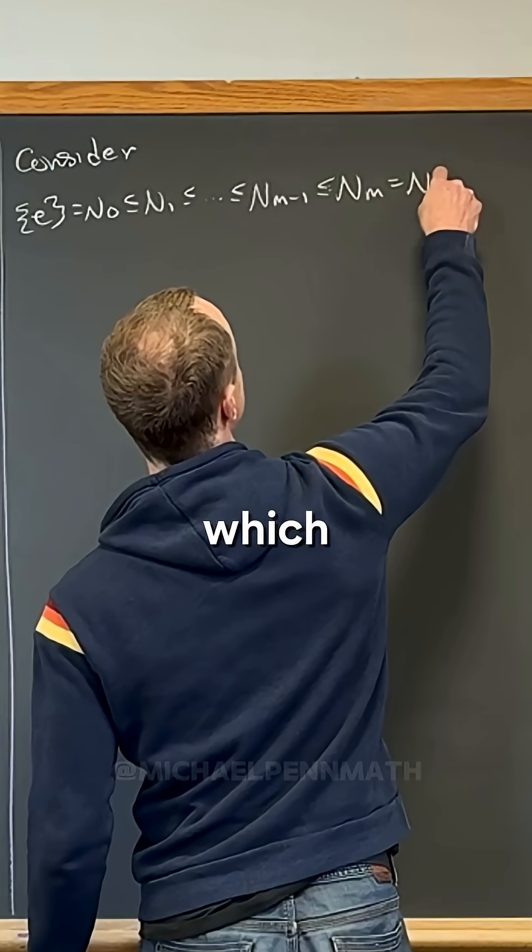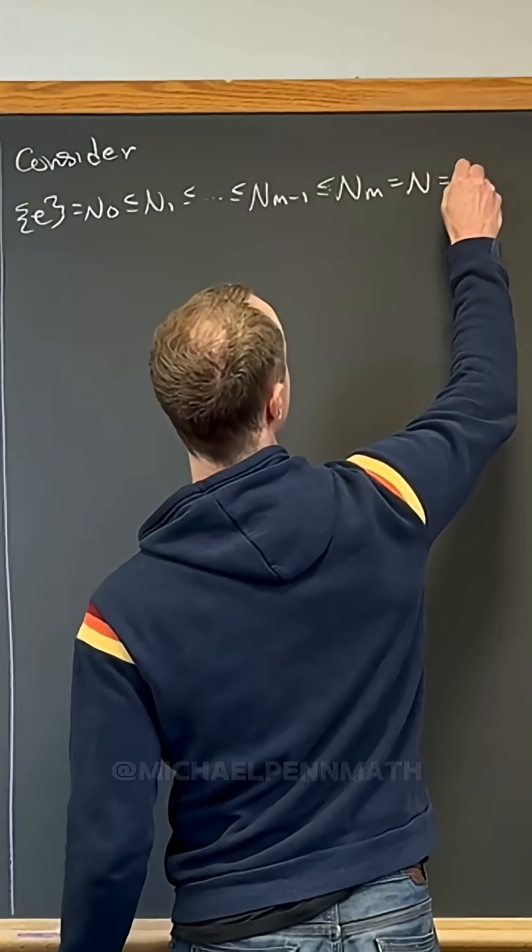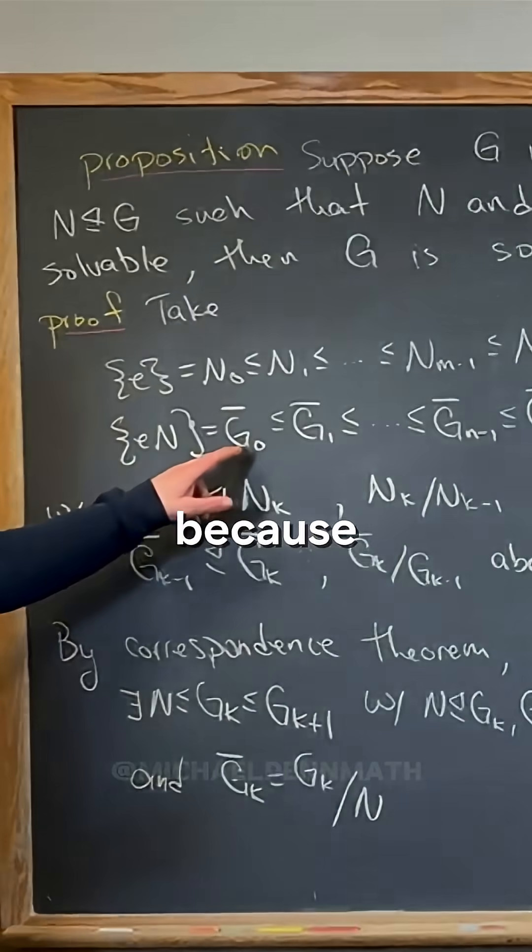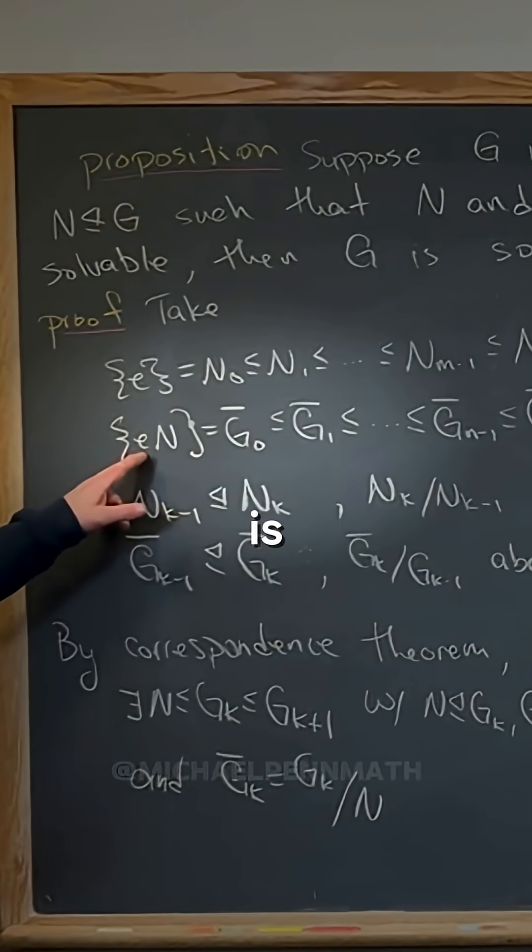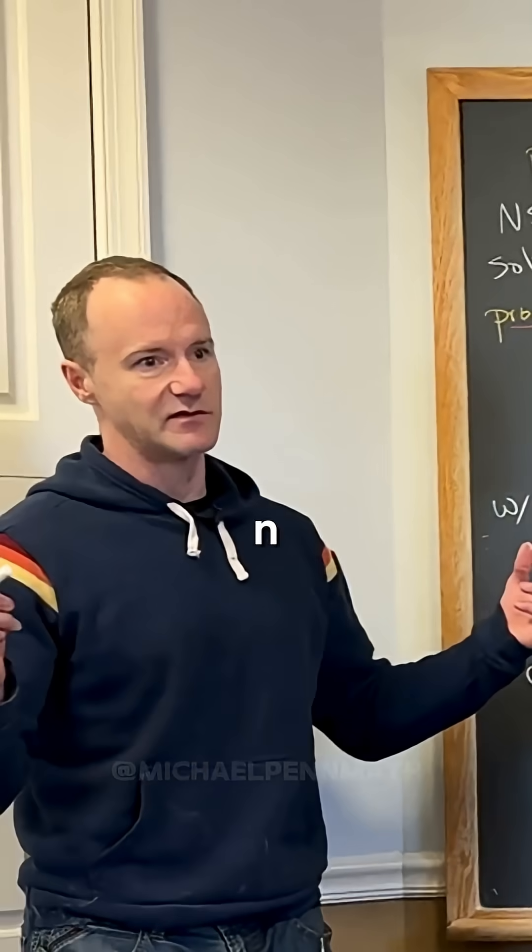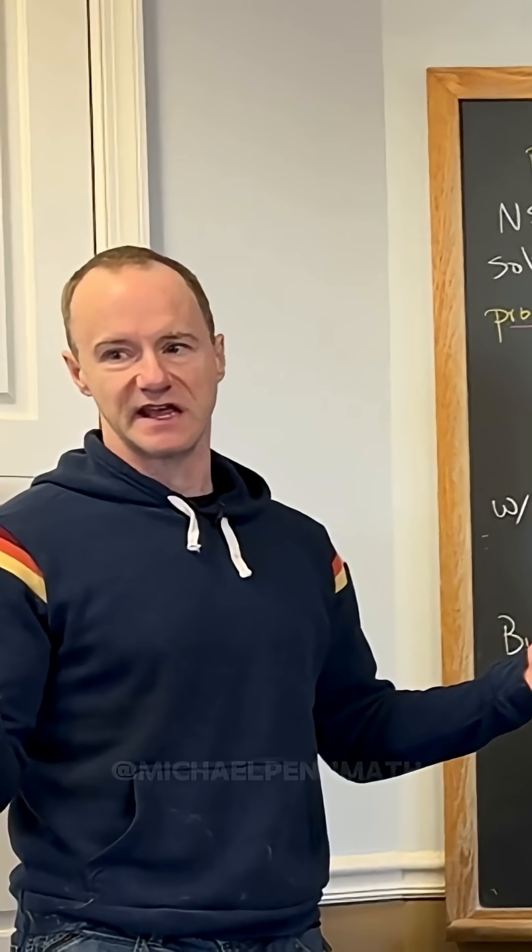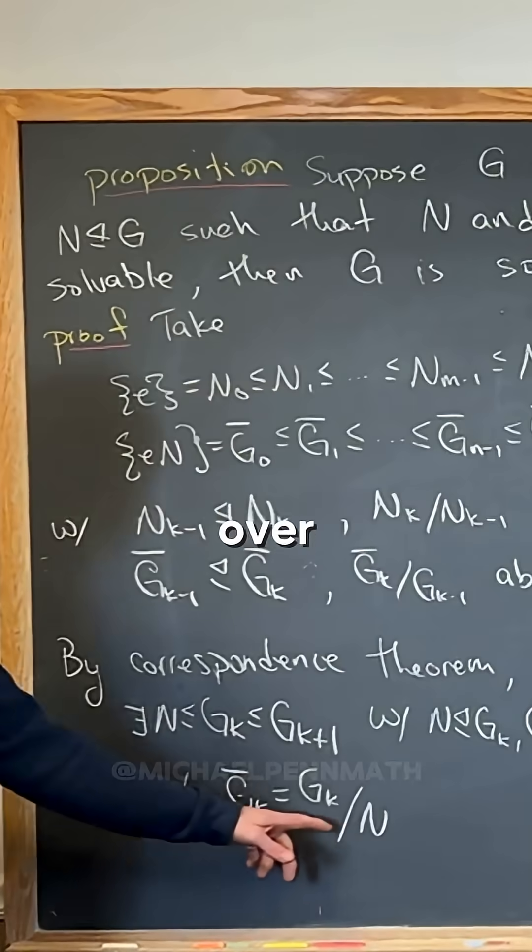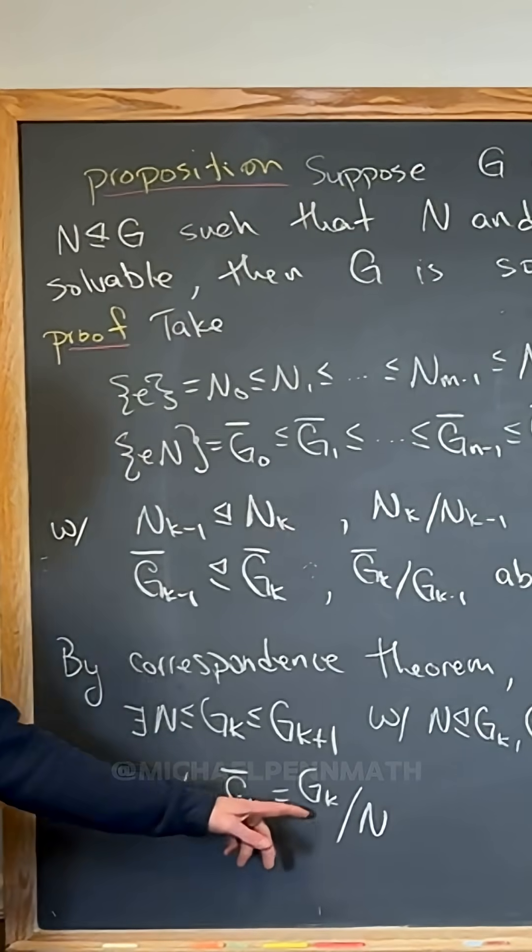Why is that? Because notice g0 bar is just the identity, right? So that means g0 bar has got to be like n mod n. But if g0 bar is n mod n, then g0 is n, right? Because look over here, g0 bar is the identity. To get the identity, the numerator has to be the same as the denominator.